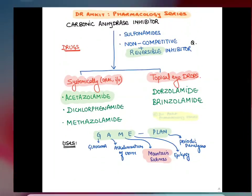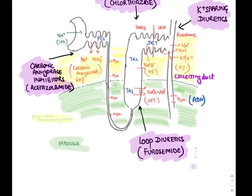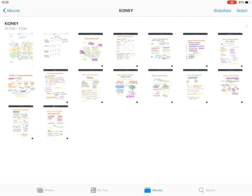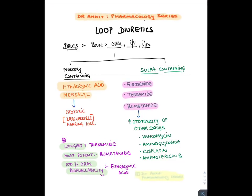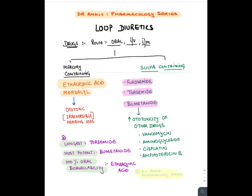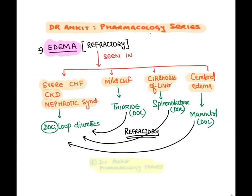Now let's discuss loop diuretics. They act on the medullary portion of the thick ascending limb. Some loop diuretics are mercury-containing drugs like ethacrynic acid and mersalyl — rarely used now, mostly banned because they are highly ototoxic and can cause permanent deafness. The sulfa-containing loop diuretics are furosemide, torsemide, and bumetanide. Among them: longest-acting is torsemide, most potent is bumetanide, and 100% oral bioavailability is of ethacrynic acid. Loop diuretics are the drug of choice in edema.